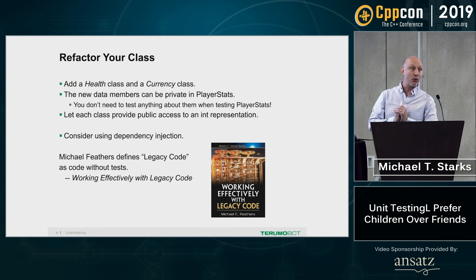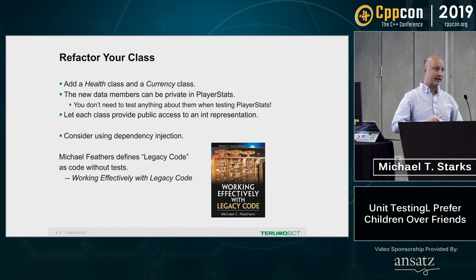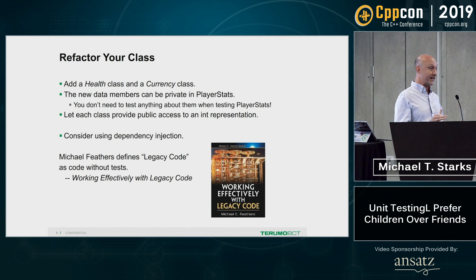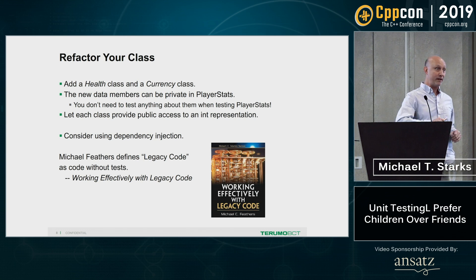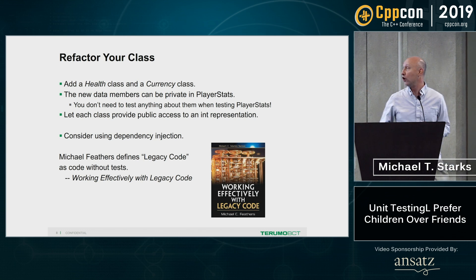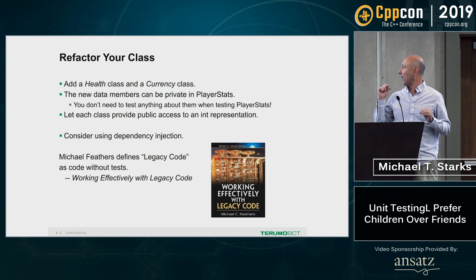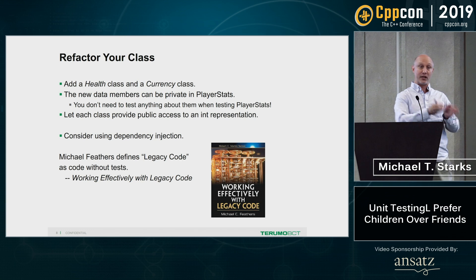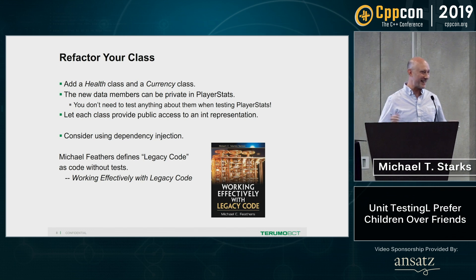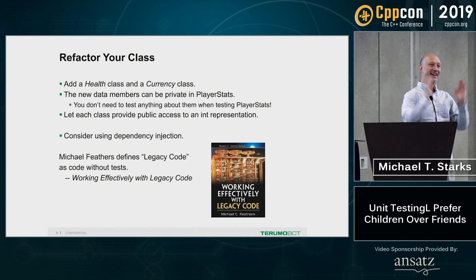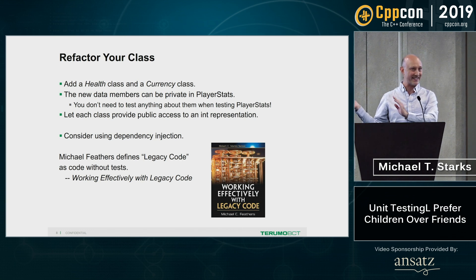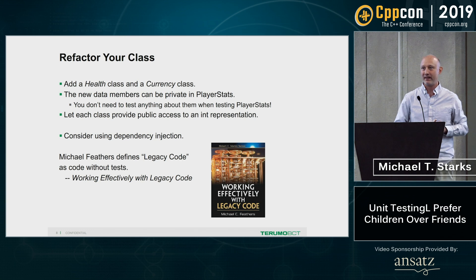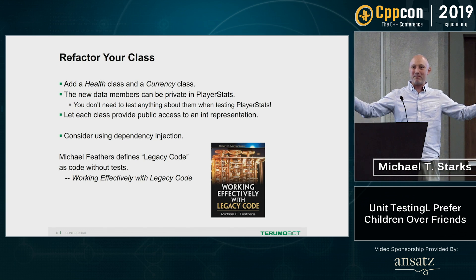Finally, you may not want to test anything that's not public in your class. If you want to avoid testing anything that's private or protected, I suggest that you refactor your class. The way that you would do it is you might have a new class — a health class and a currency class — and with those two classes, they could each have a public way of giving the integer representation that you're trying to test. With player stats, you don't need to touch it; all you need to do is test the public interface, and when you test each of these other classes, again, you're testing their public interface. This extends to big, complicated messes.